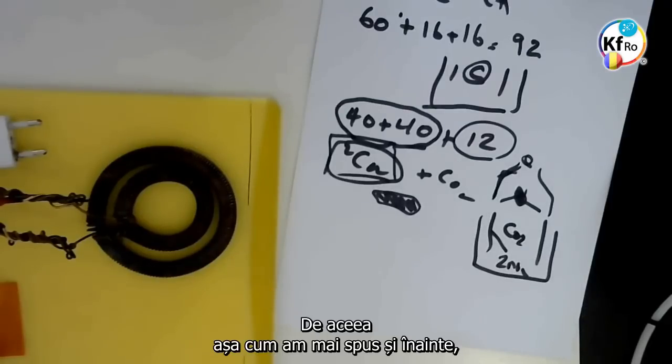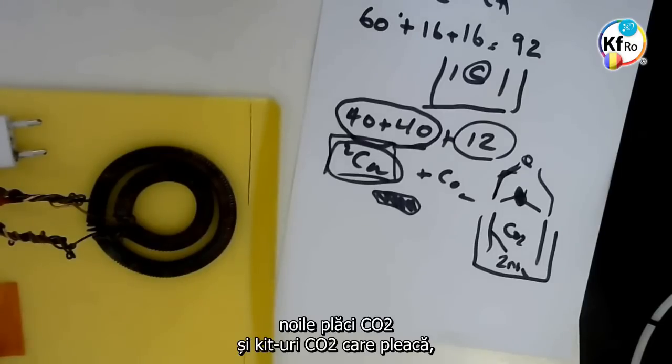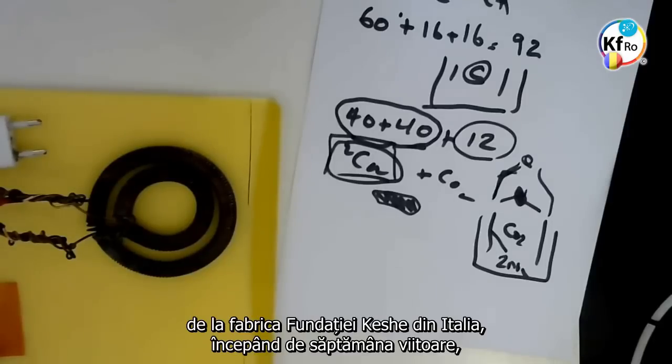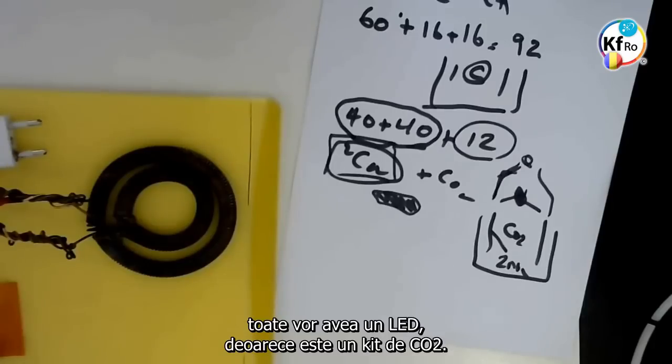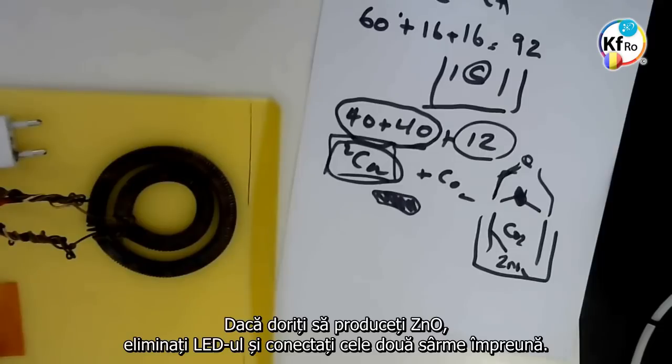That's why, as I said before, in the couple of weeks past teaching, the new CO2 plates and CO2 kits which are leaving the Keshe Foundation Manufacturing Italy from next week, all have an LED light, because it's a CO2 kit. If you want to produce Zinc Oxide, take the LED out and just connect the two wires together.